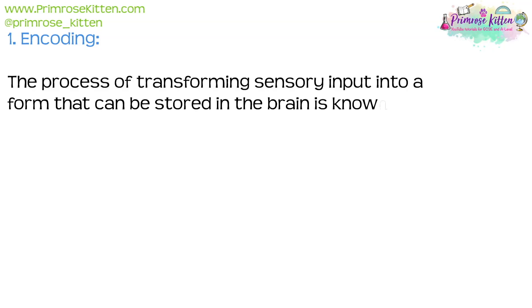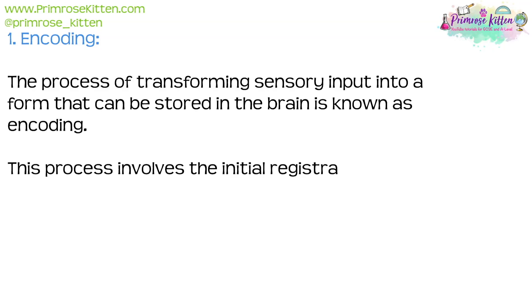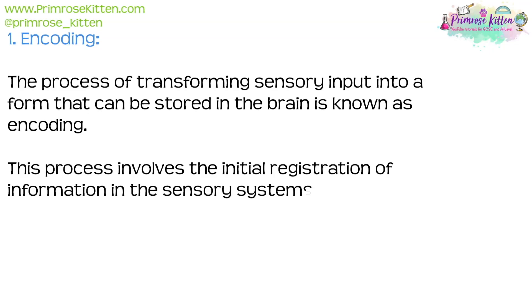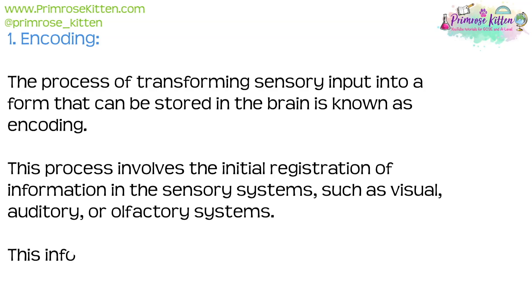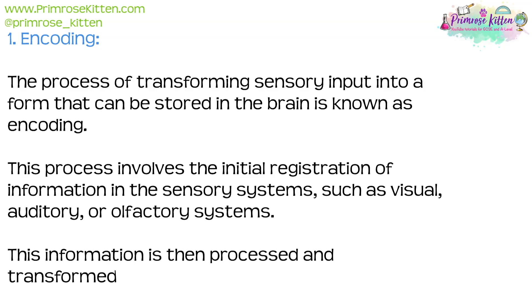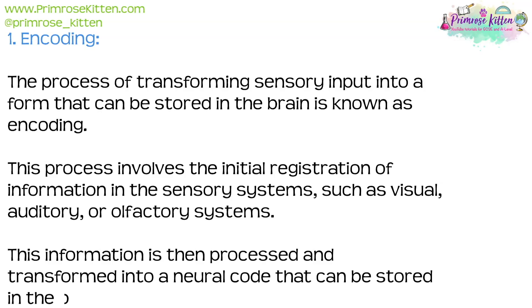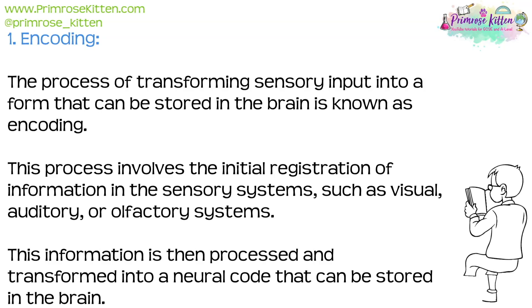Step 1: Encoding. The process of transforming sensory input into a form that can be stored in the brain is known as encoding. This process involves the initial registration of information in the sensory systems, such as visual, auditory or olfactory systems. This information is then processed and transformed into a neural code that can be stored in the brain.